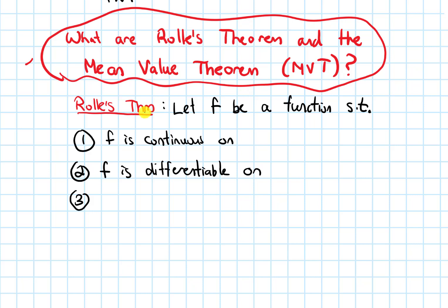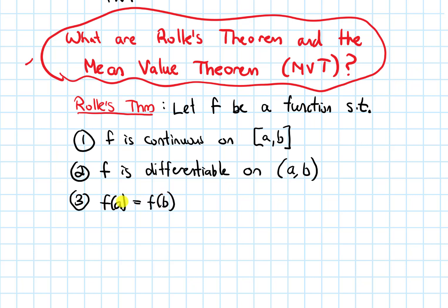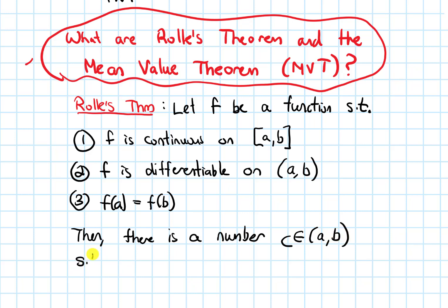The preliminary part of Rolle's Theorem says: let f be a function such that f is continuous on a closed interval from a to b, differentiable on an open interval from a to b, and the third condition is f of a needs to equal f of b — the y-values at a and at b need to be the same. Then the conclusion is there is a number c in the open interval from a to b such that the derivative at c equals zero.